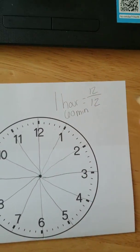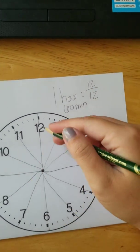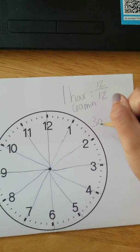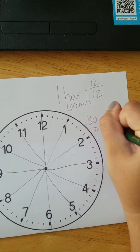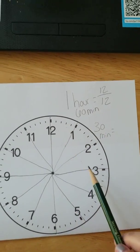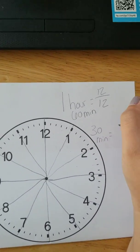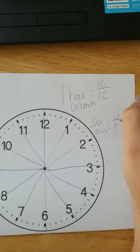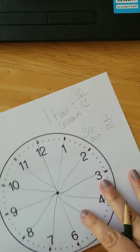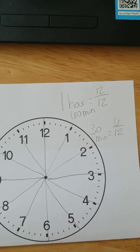And then if I have like the half, so 30 minutes is equal to - let's see - 1, 2, 3, 4, 5, 6 - six twelfths. Just like how 6 is half of 12, 30 minutes is half of 60 minutes, or half of an hour.